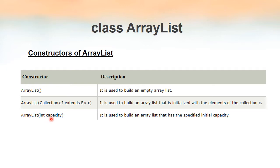The third constructor takes one integer parameter representing the initial size of the ArrayList. Even though ArrayList is dynamic, we can create one with an initial size — say size 10. Later, as we add or remove elements that size will change, but initially we can specify a particular size using this third constructor. These three constructors represent constructor overloading — more than one constructor with different parameter lists.